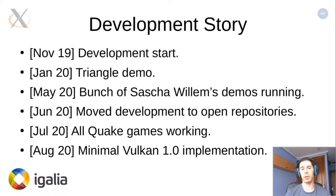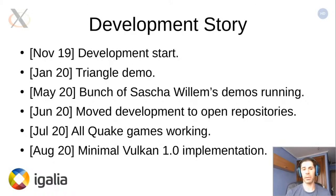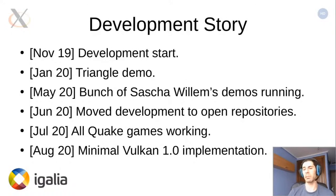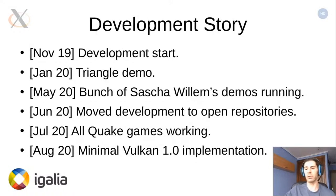From that point onwards we just focused on getting the remaining feature set to work. By the end of August we finished with multi-sampling and robust buffer access, which were the last missing features. At this point we have a minimal Vulkan 1.0 implementation running, and we're focusing on getting a better pass rate on CTS.